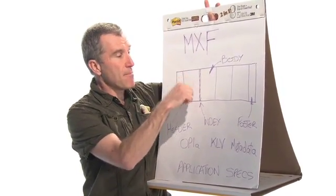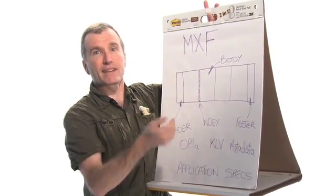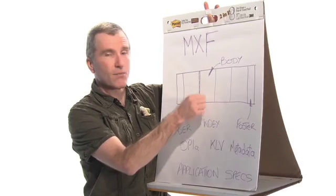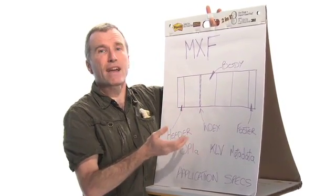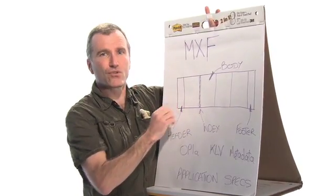And then in between bits of body we have index tables. Index tables convert time offsets to byte offsets. This allows you to do random access within the file and find the bits that you want to do trick modes.